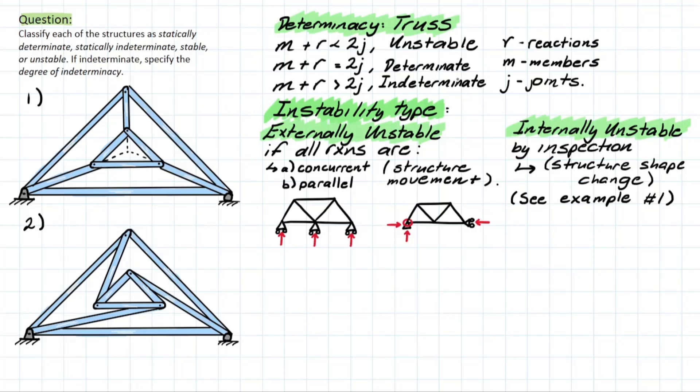For a determinate structure, we could use equilibrium equations. If the structure was unstable, that means it wouldn't be safe to construct as it would translate or rotate upon construction. An indeterminate structure, however, would require idealization of the model to relate deflection and slope to new equations in order to solve outside of just the equilibrium equations we had prior.